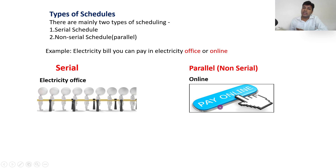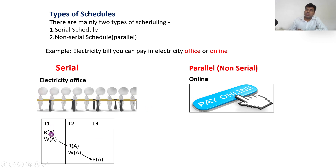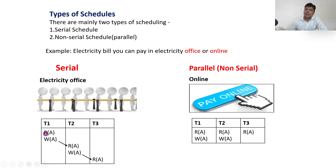In serial schedule, one person checks the balance and pays, then T2 checks the balance and pays — each step in sequence. But in online payment, at a time, they are not in order — nobody is waiting for another person. T2 may wait for T1 to complete, and T3 waits for T2 to complete. But in online, everybody was paying at the same time.